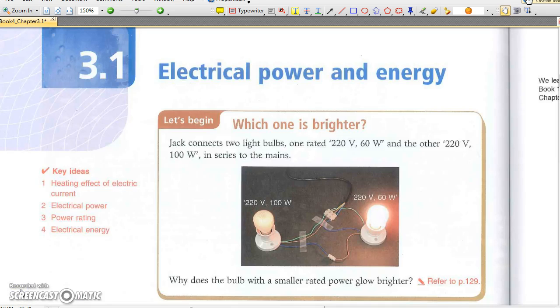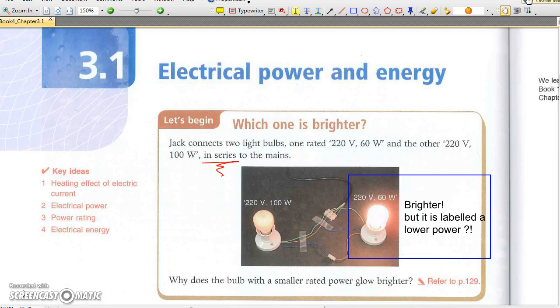Chapter 3.1, Electrical Power and Energy. In the last beginning section, there are two light bulbs connected in series. Then it turns out the light bulb which labeled a lower power is brighter. Why?